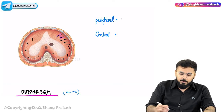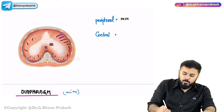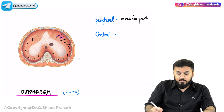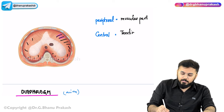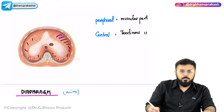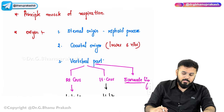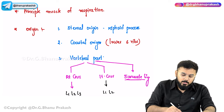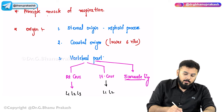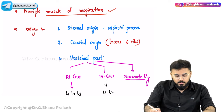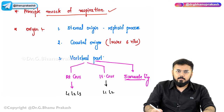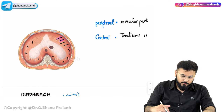The peripheral part of the diaphragm is muscular, whereas the central part of the diaphragm is tendinous. The diaphragm is the principal muscle for respiration. Another important thing is that the diaphragm originates from three important places.